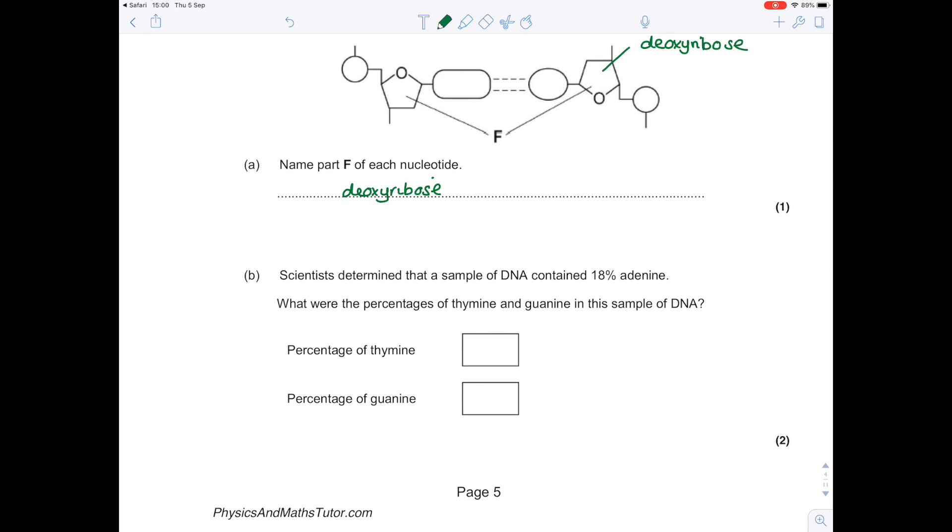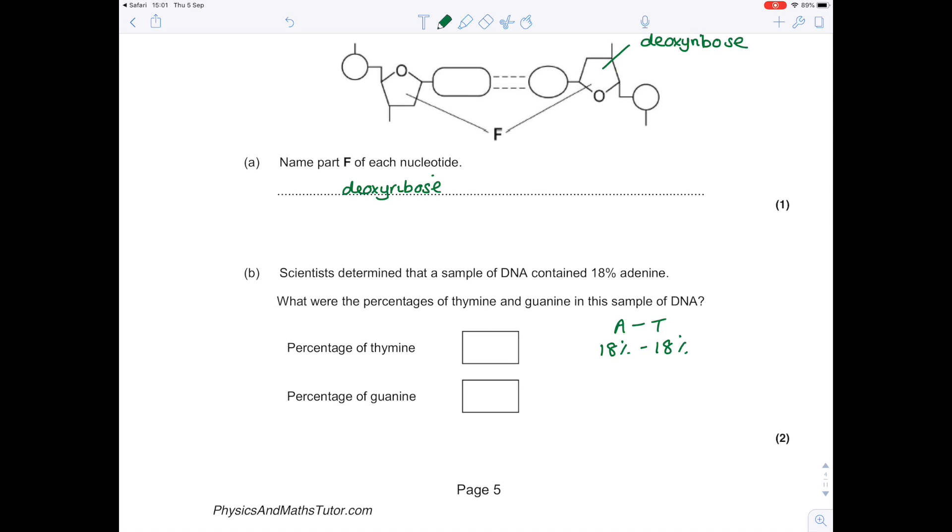Scientists determined that a sample of DNA contained 18% adenine. What are the percentages of thymine and guanine in this sample of DNA? This is like a puzzle. We know that adenine always binds to thymine, so if 18% of it is adenine, we know that they must be equal in order for them to correctly base pair. So 18% of thymine must exist. We know that adenine, thymine, cytosine, and guanine make up 100% of the DNA—there are no other bases. So how do we make that add up to 100? You can add together 18 plus 18 to get 36, take that away from 100, so we know what percentage is made up of cytosine and guanine, which is 64, and therefore divide that by 2, so we know that it's 32% of each.